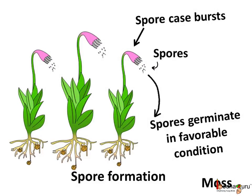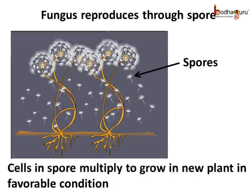In ferns and mosses, flowers are not there, so seeds cannot be formed. Instead, their reproductive bodies are the spores, which are mostly spherical in shape and protected by a thick wall. A spore can be single-celled or multi-celled. In moss, the spore case bursts and the spore is released into the air. Many fungi also reproduce through spores. When the environmental conditions are right, the spores germinate — that is, the spore bursts out of the thick wall, the cell starts multiplying, and the spore grows into a new plant.